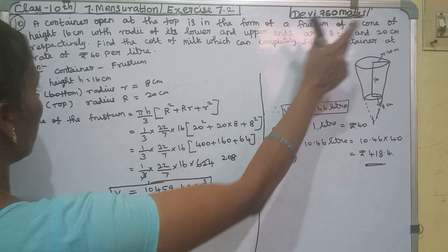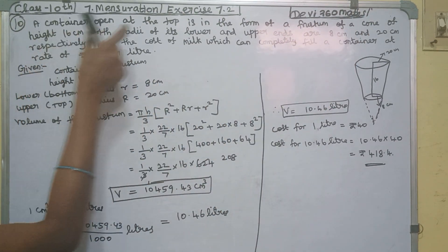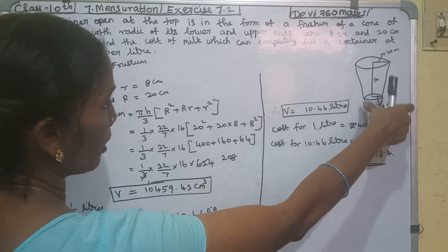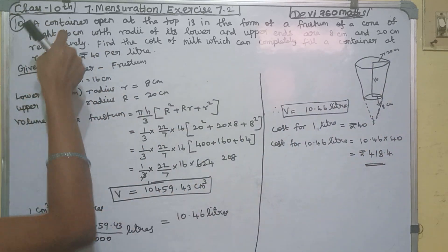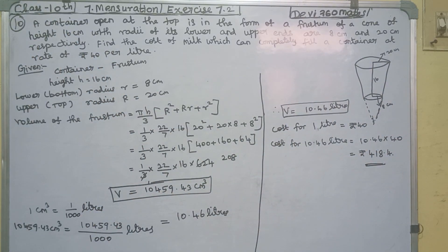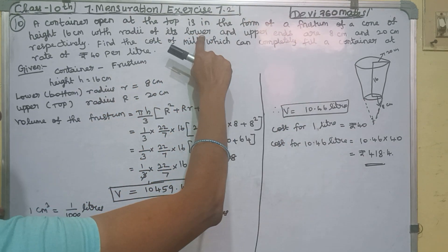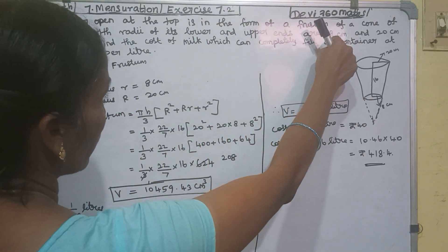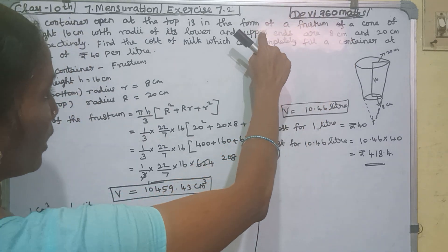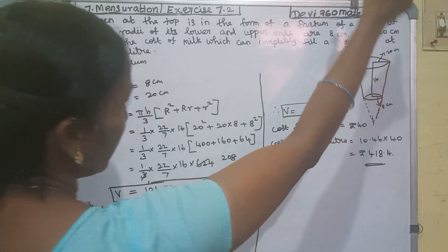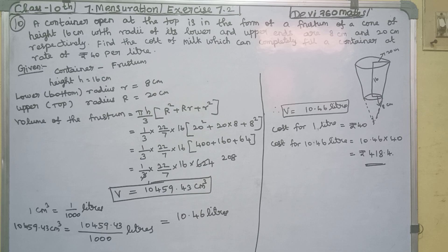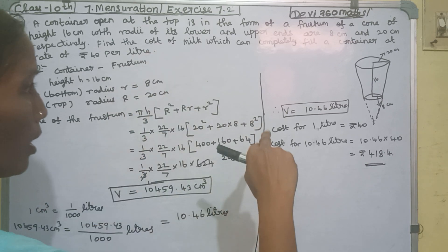The height is 16 cm. The radius lower and upper - first lower radius is 8 cm, the upper radius is 20 cm. Next, find the cost of milk which can completely fill the container at the rate of 40 rupees per liter.